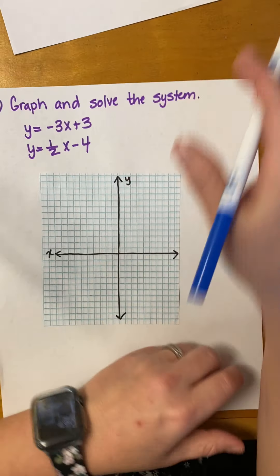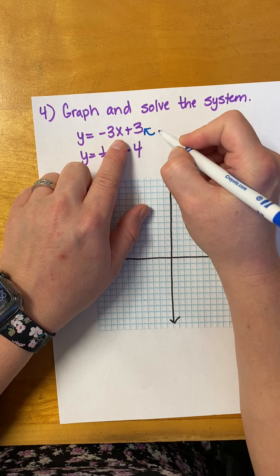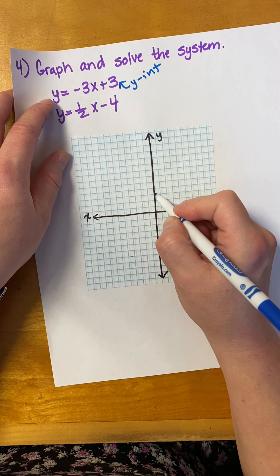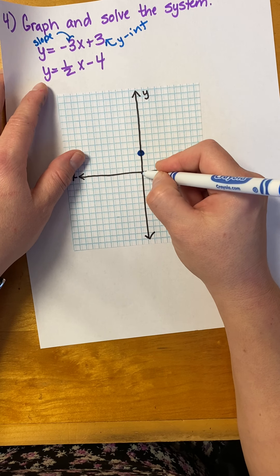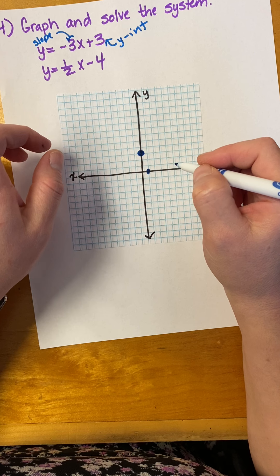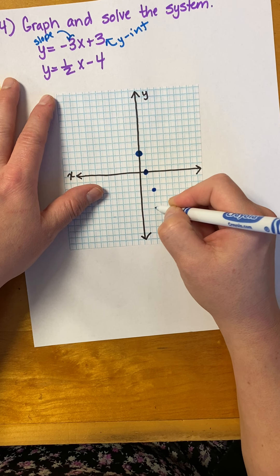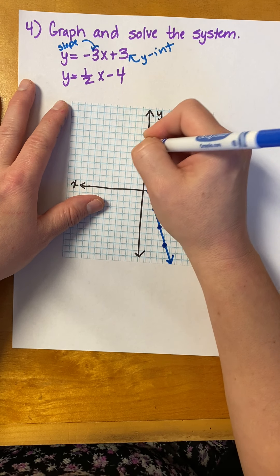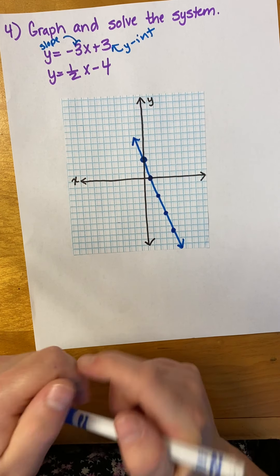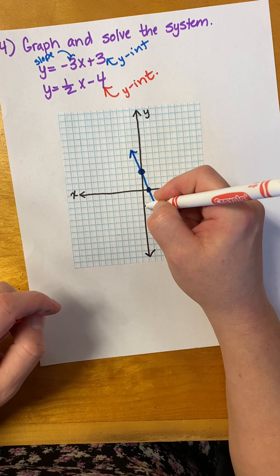Let's look at another one. They gave the equations to us in slope-intercept form — they want me to graph them and solve it. Looking at the first equation: the y-intercept is three, so I put a point at three. The slope is negative three, so I go down three and over one. I'll graph several points since I'm looking for the intersection: down three over one, again, again, and again.